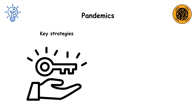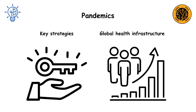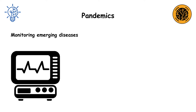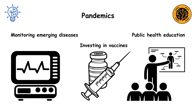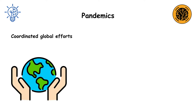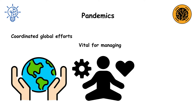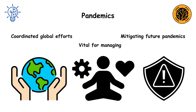Key strategies include improving global health infrastructure, monitoring emerging diseases, investing in vaccines, and promoting public health education. Coordinated global efforts are vital for managing and mitigating future pandemics.